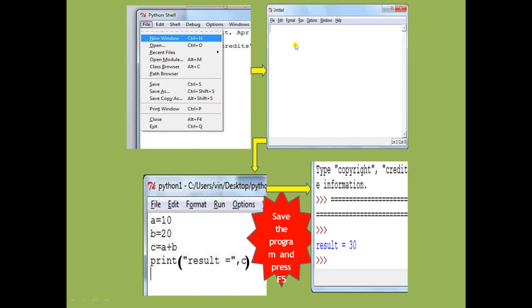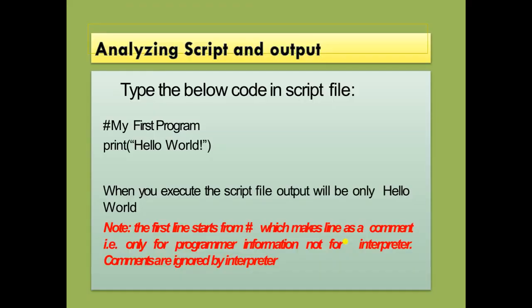Analyzing script and output: type the code in the script file and when you execute it, the output will be printed — for example, 'Hello World'. The hash symbol (#) is used for a single-line comment — it will not be executed by the interpreter because it is a comment and is ignored by Python.